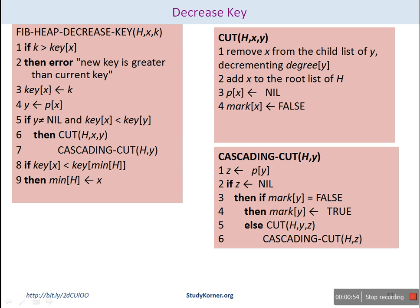If the key of X is greater than the key of K, we replace it with the new key because it will decrease it. Then we make a pointer pointing to the parent node and check whether the parent is null. If it is not equal to null and the key of the parent is greater than the key of the child, we need to cut the node X from the child list. The cut procedure removes X from the child list of Y, decrements the degree of Y, adds node X to the root list of H, sets the parent to nil, and marks it as false.